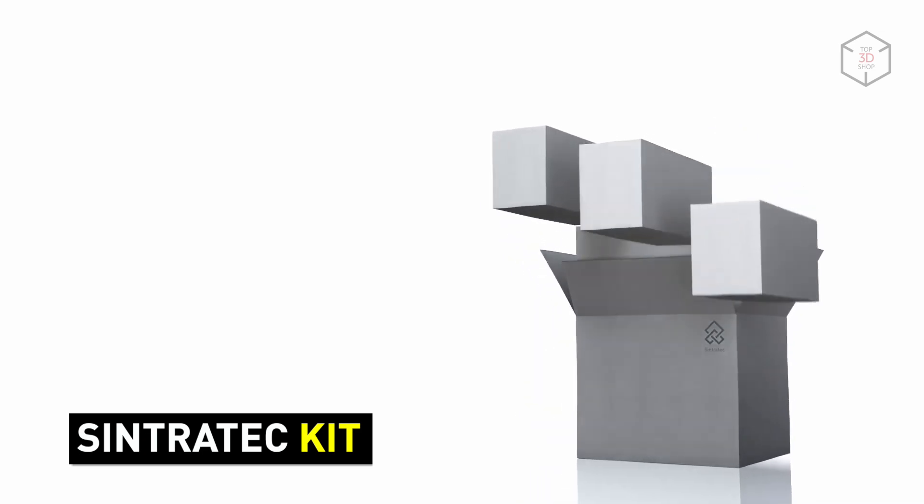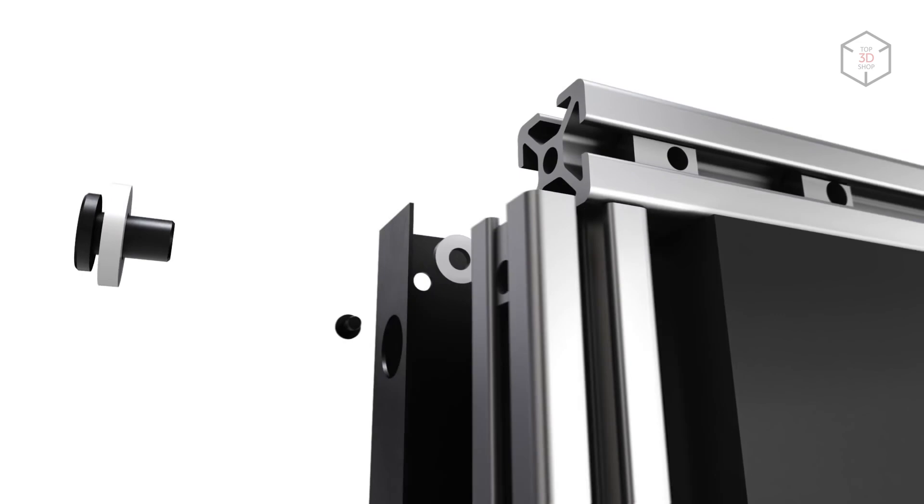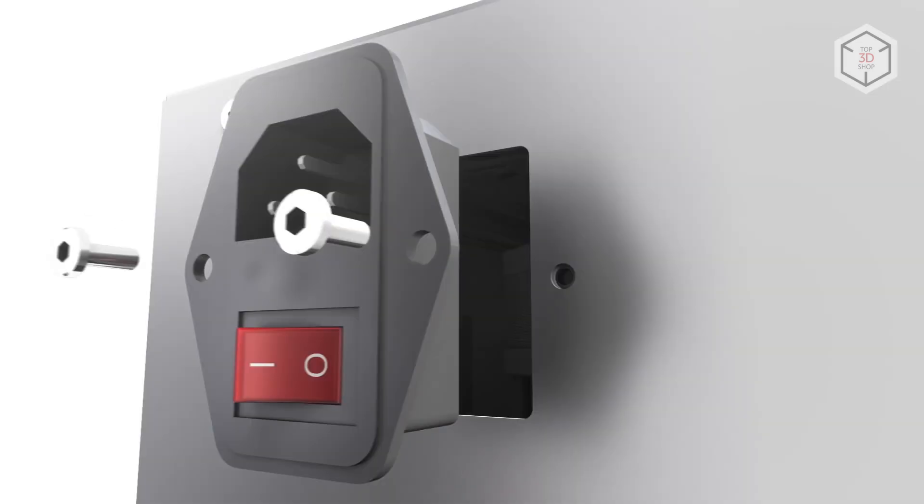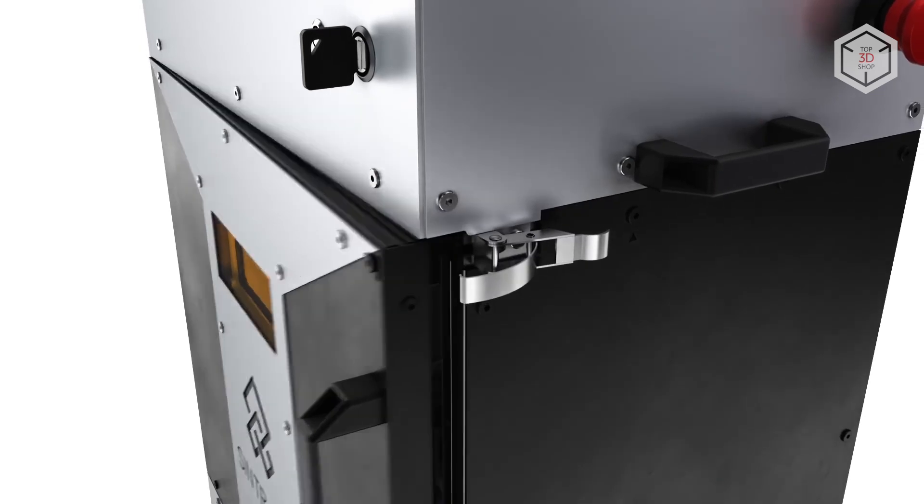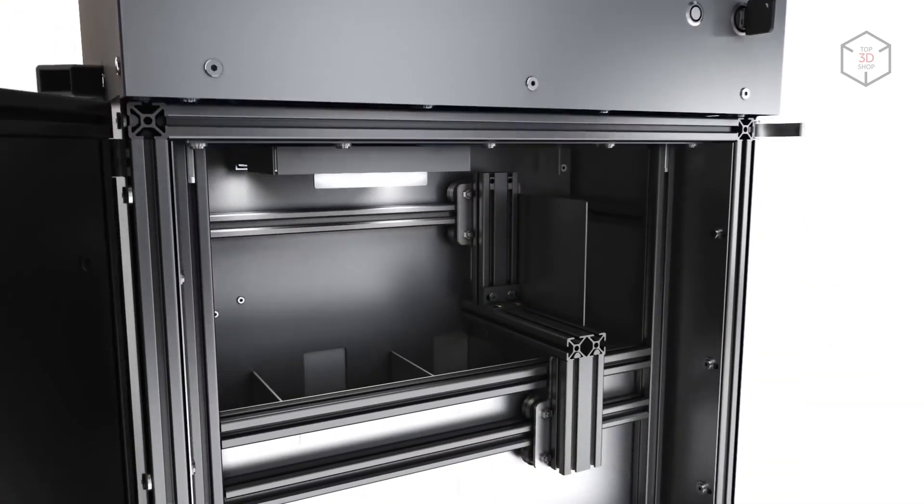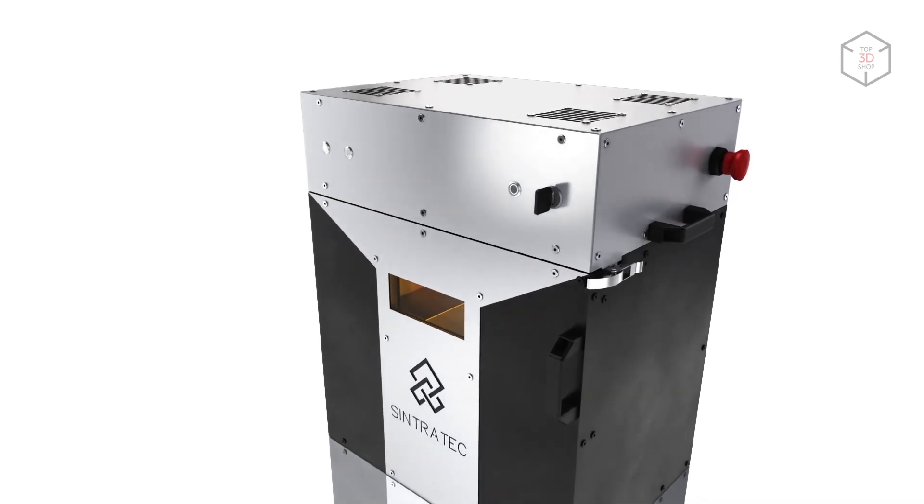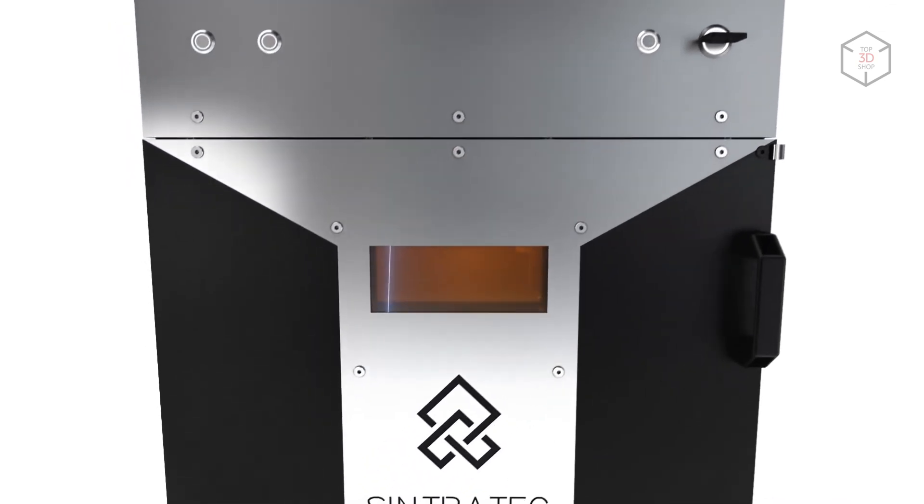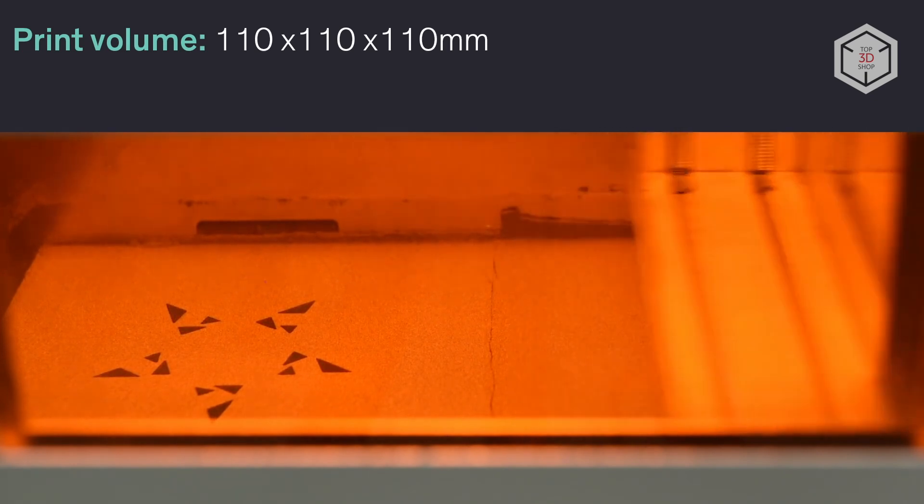The Sintratec kit is a unique product in the market of compact SLS 3D printers. Being a DIY solution, it's one of the most affordable SLS printers. The Sintratec kit allows printing with nylon 12 and TPE. It's an open material system, which means you can use third-party printing powders. The device offers the maximum recommended print volume of 90 x 90 x 90 mm, and it's very compact and lightweight for an SLS printer.